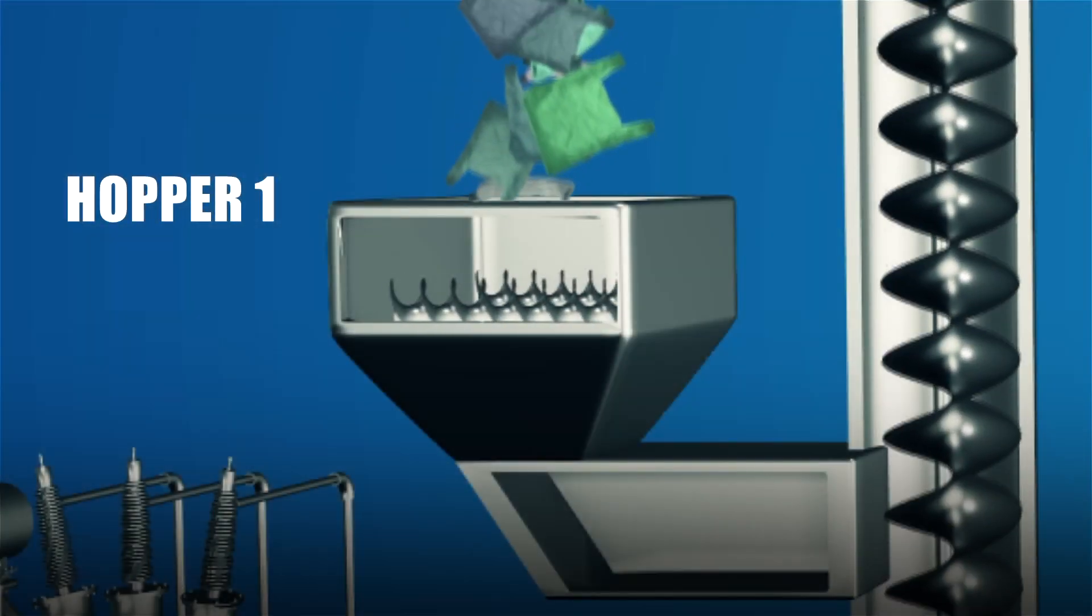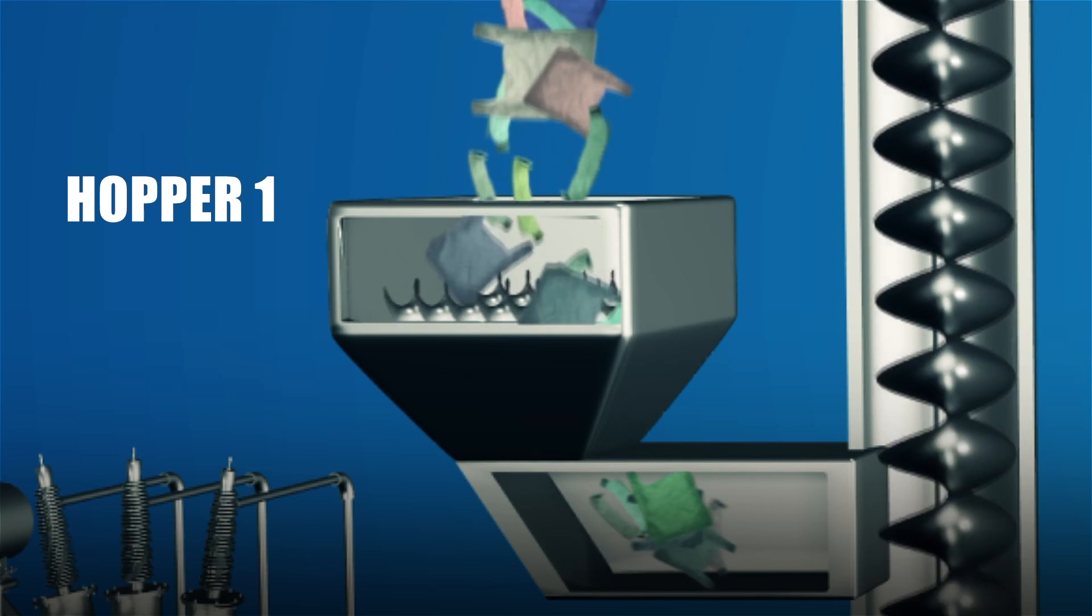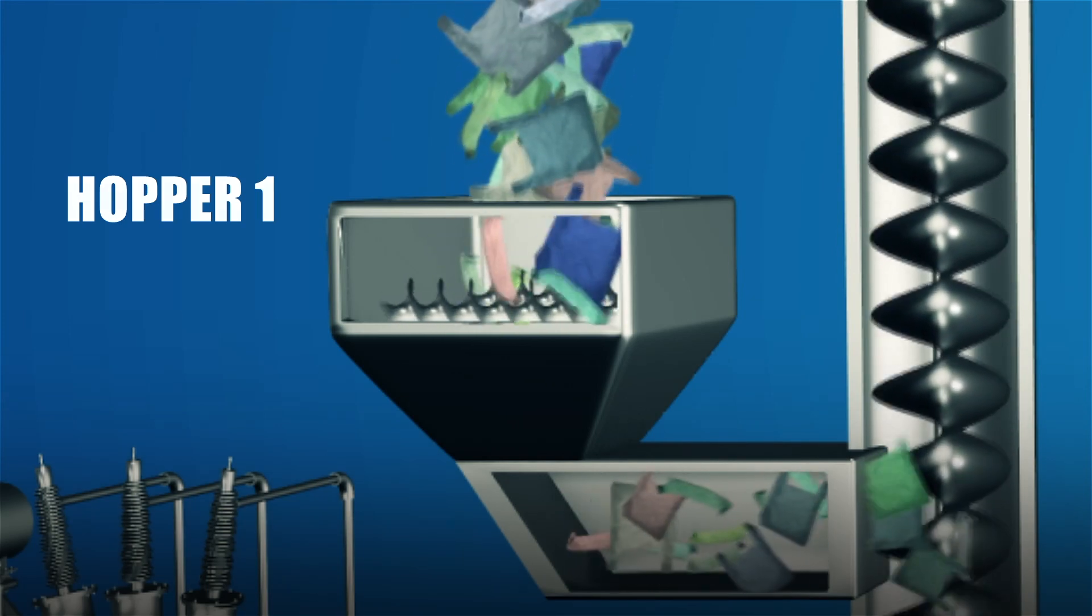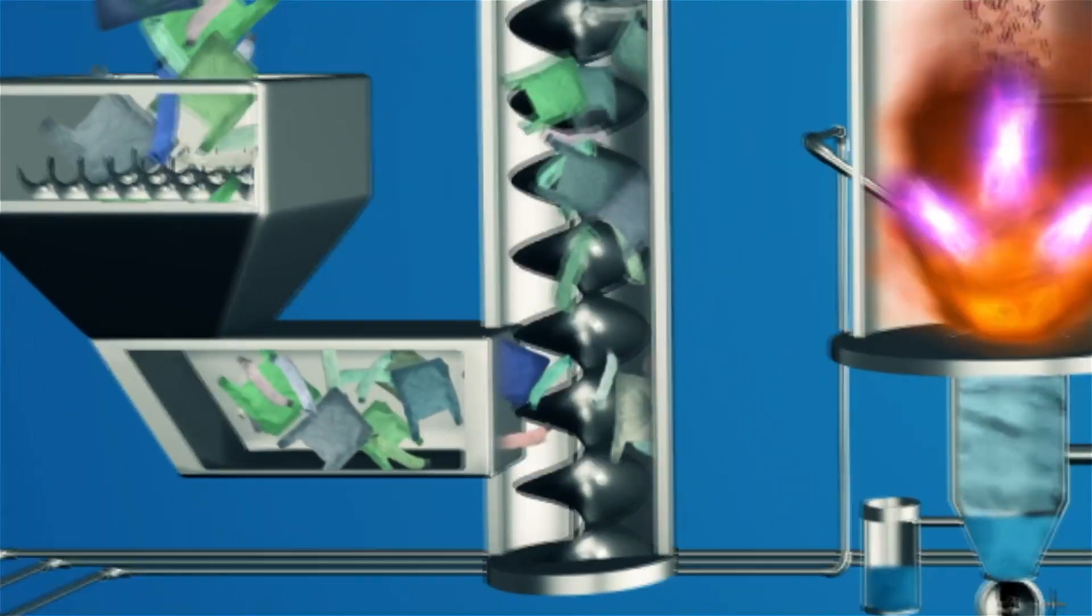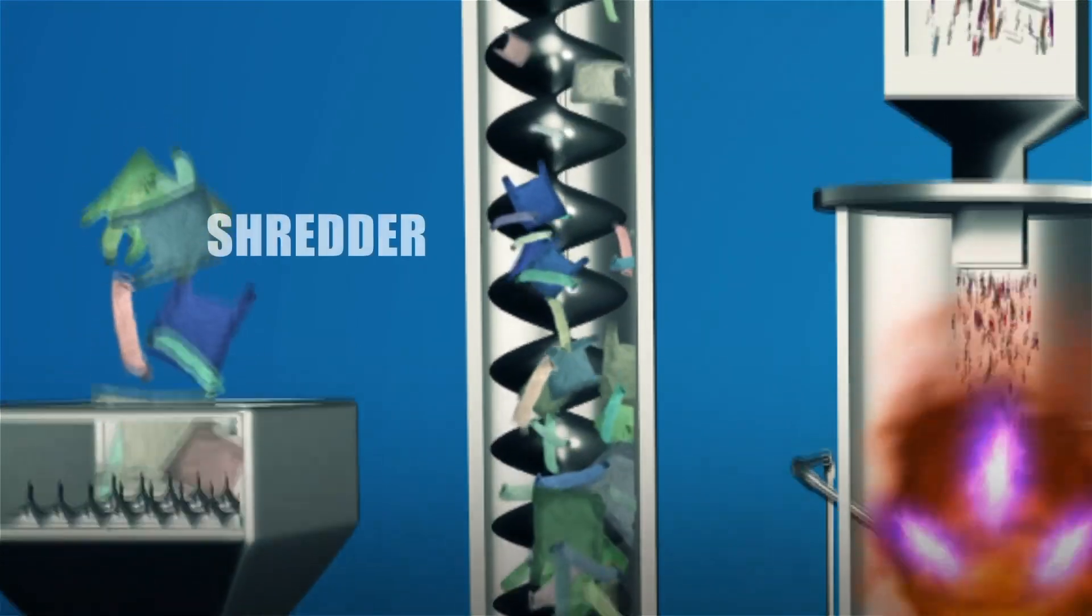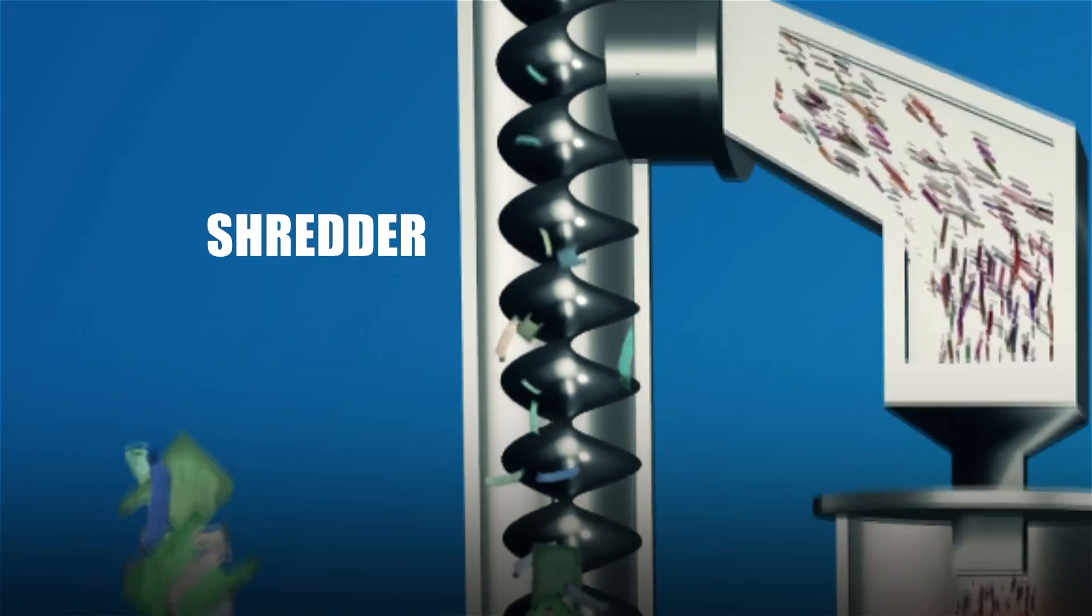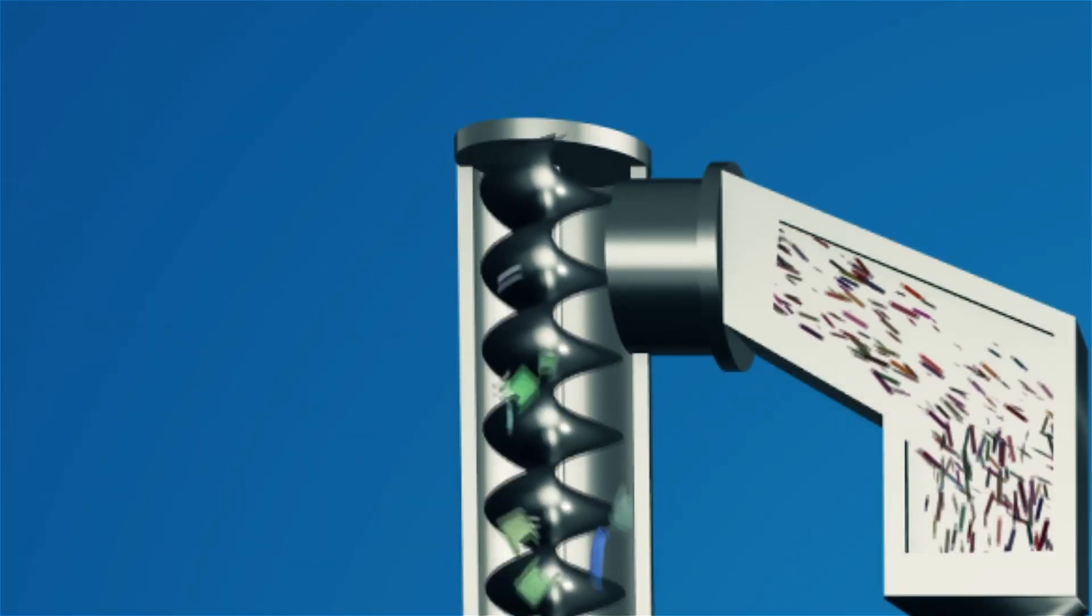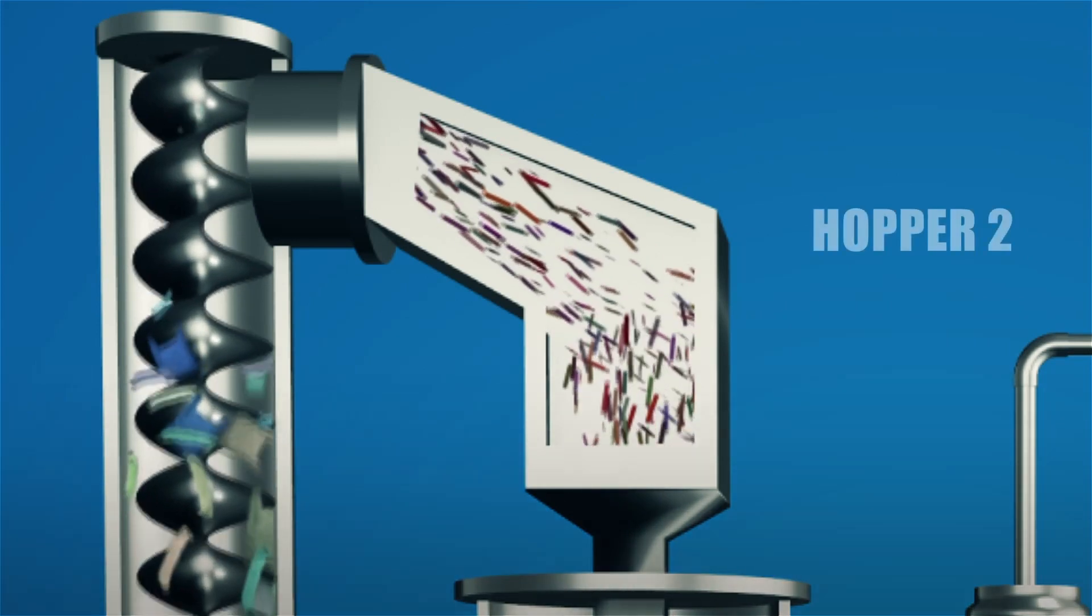In the first step, the plastic waste is fed in hopper 1 to provide an intermittent supply to the column of shredder. The shredder reduces plastic waste into smaller bits of suitable size, which are fed to hopper 2.